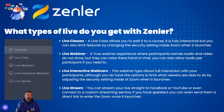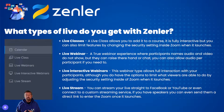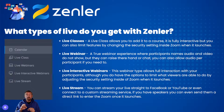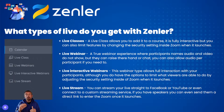What type of lives do you get with Zenler? We have a few different options. First, we have live classes. A live class allows you to add it to a course — it's fully interactive, but you can also limit features by changing the security settings inside Zoom when it launches. You can turn camera, audio, and screen sharing on or off, and these are set before the live class starts. So it gives a full interactive experience, or you can limit those features, or open them up at the end for an open Q&A session.